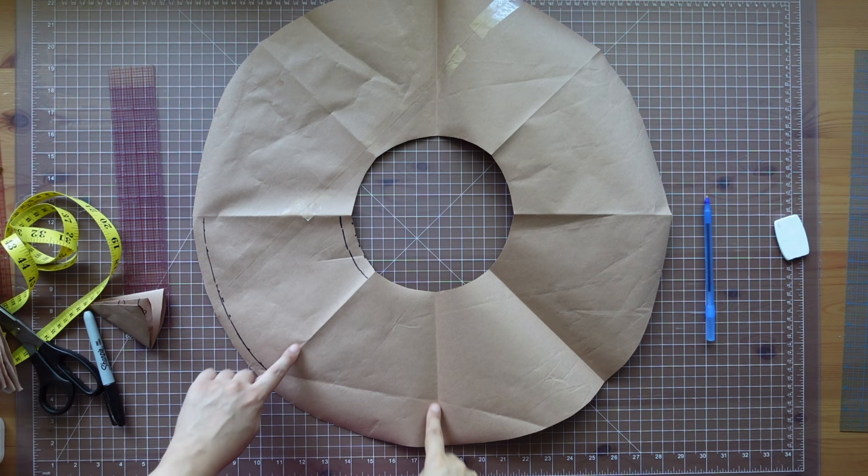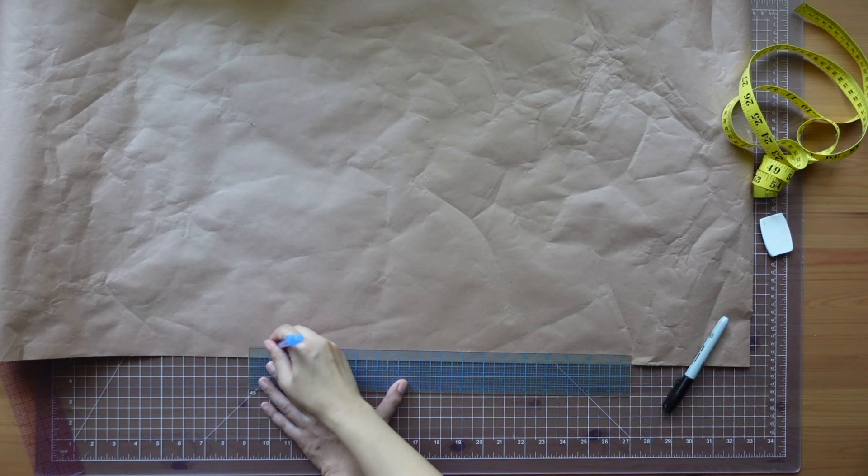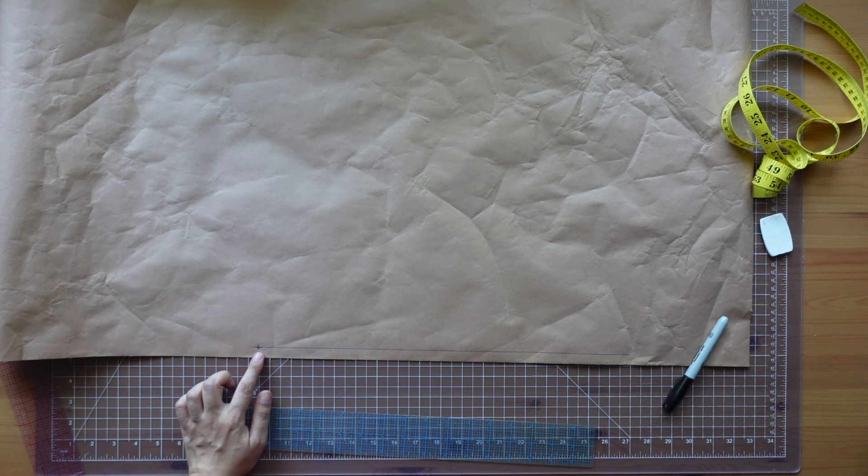You're going to remove this section and these lines are going to be the center back seam. I added half inch seam allowances for the center back seam before I cut out the excess paper. From the straight edge of the paper, I measured half inch for the seam allowance and drew the straight line.